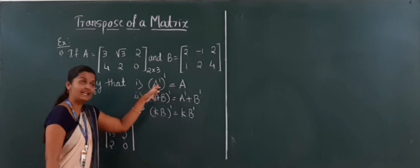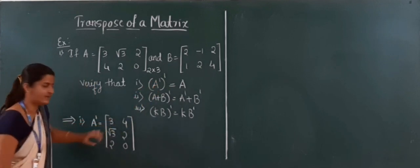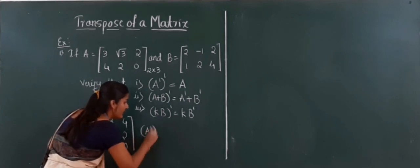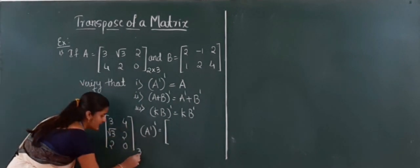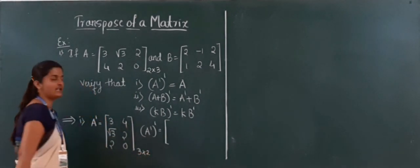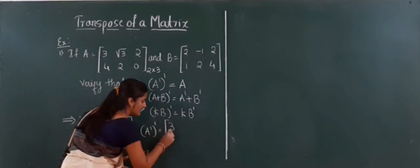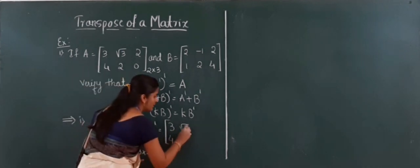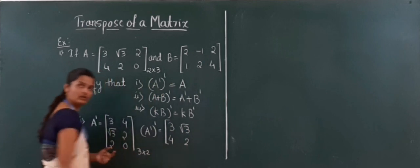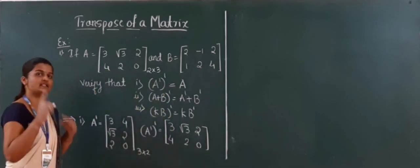Now I apply transpose to A dash itself. A dash has order 3 by 2. I write its rows as columns: first row 3, 4 becomes first column; next row root 3, 2 becomes second column; next row 2, 0 becomes third column. This is our A dash dash — the transpose of the transpose.